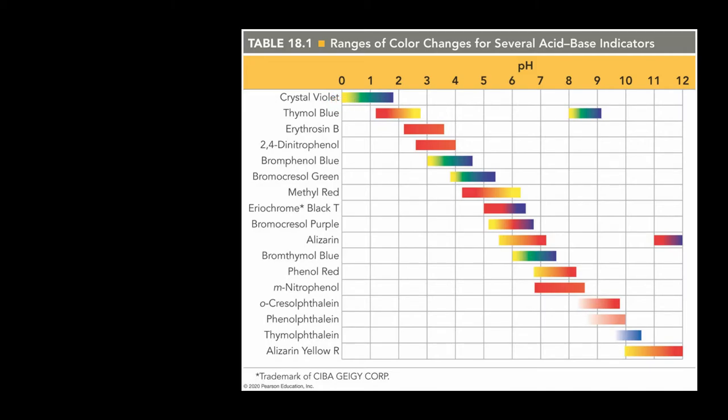If you look at something like thymol blue, what you find is that as the pH is below about one, it's a red color, and as it's above about three, it's a yellow color. And it transitions over a pH range of about two units wide. Thymol blue must be a diprotic acid because there's another pH point where it changes. Below about eight, it's yellow. Above about nine, it's blue.